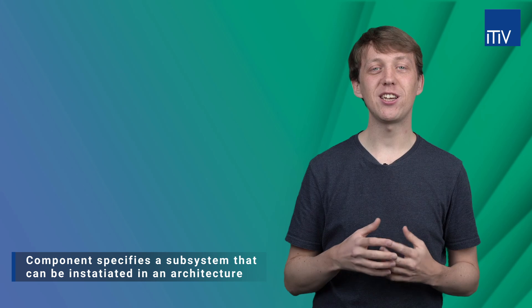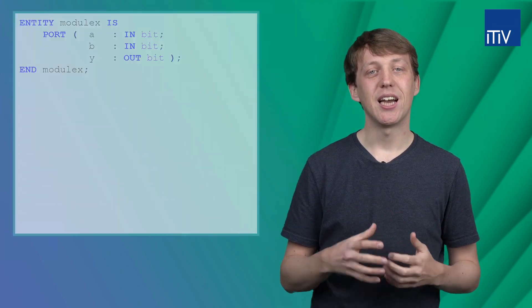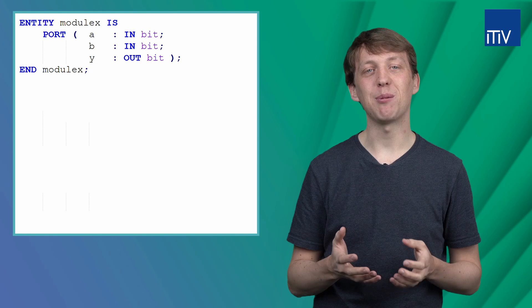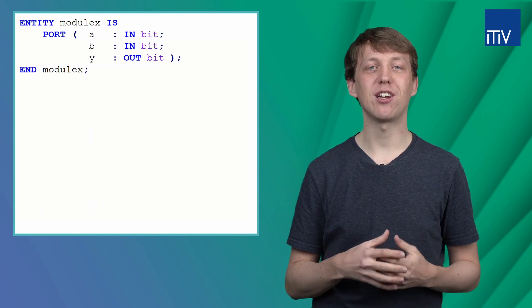Let's do a simple example which instantiates the AND gate we've designed before. Just imagine that we want to design a logical block using an AND gate. As you can see, I already set up the entity description of such a logic block.